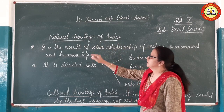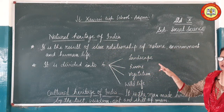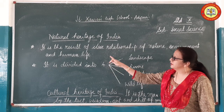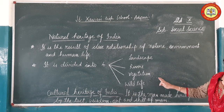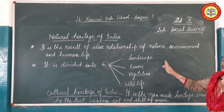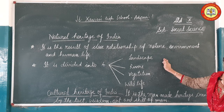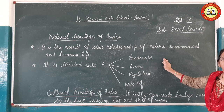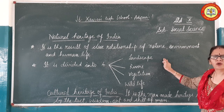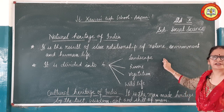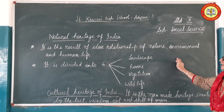Natural heritage of India is the result of the close relationship of nature, environment and human beings. Natural heritage is divided into four: landscape, rivers, vegetation and wildlife. Under landscape we have the Himalayas, different snow-peak covered mountains, pilgrim places like Kedarnath, Badrinath, Amarnath, deserts, forest, and a lot of scenery around us.